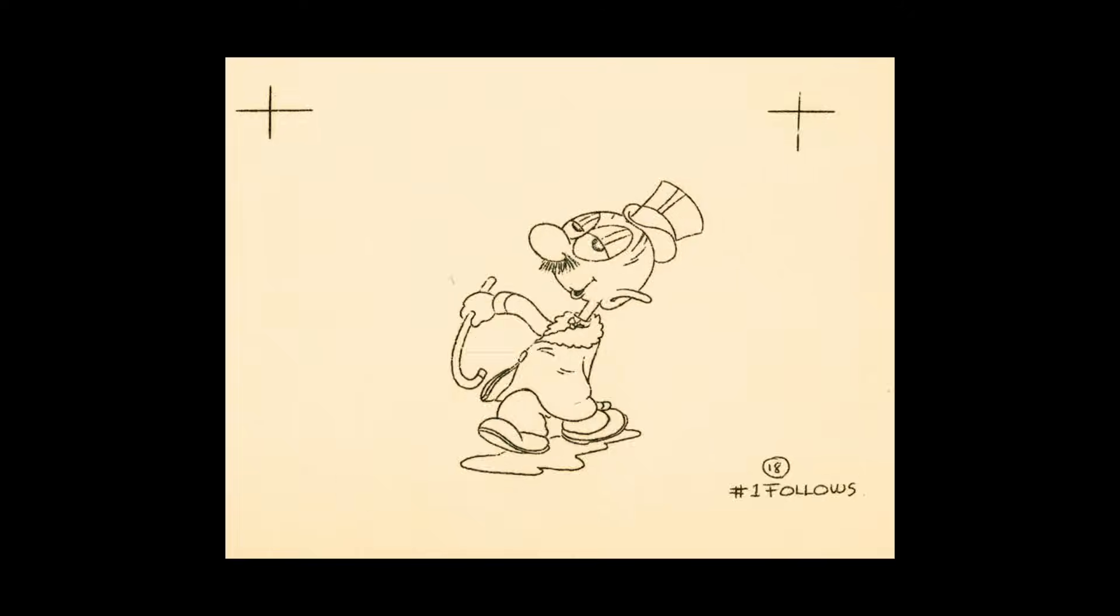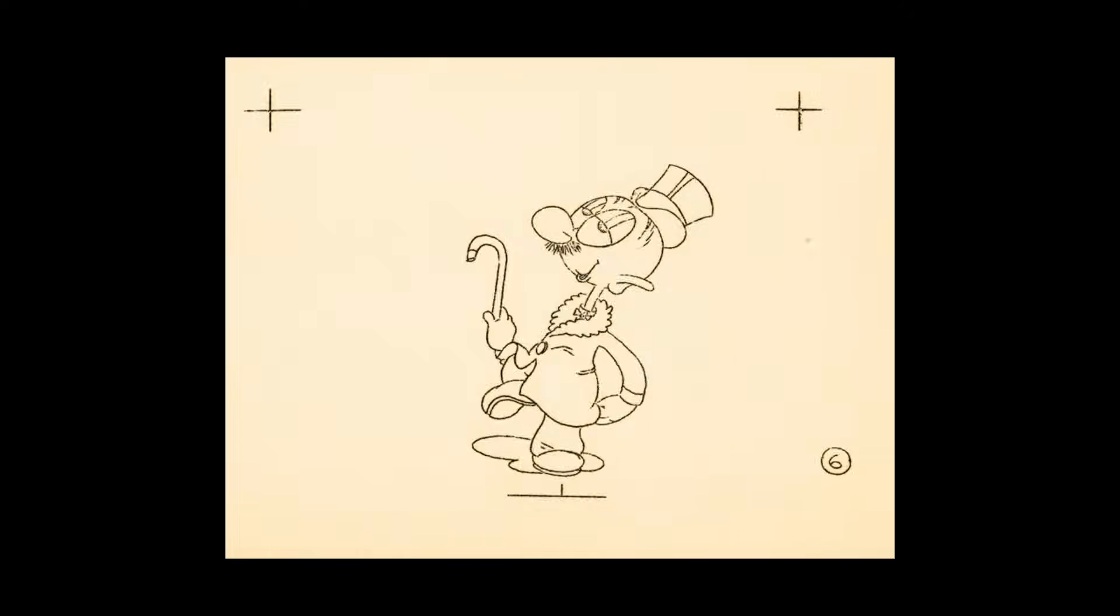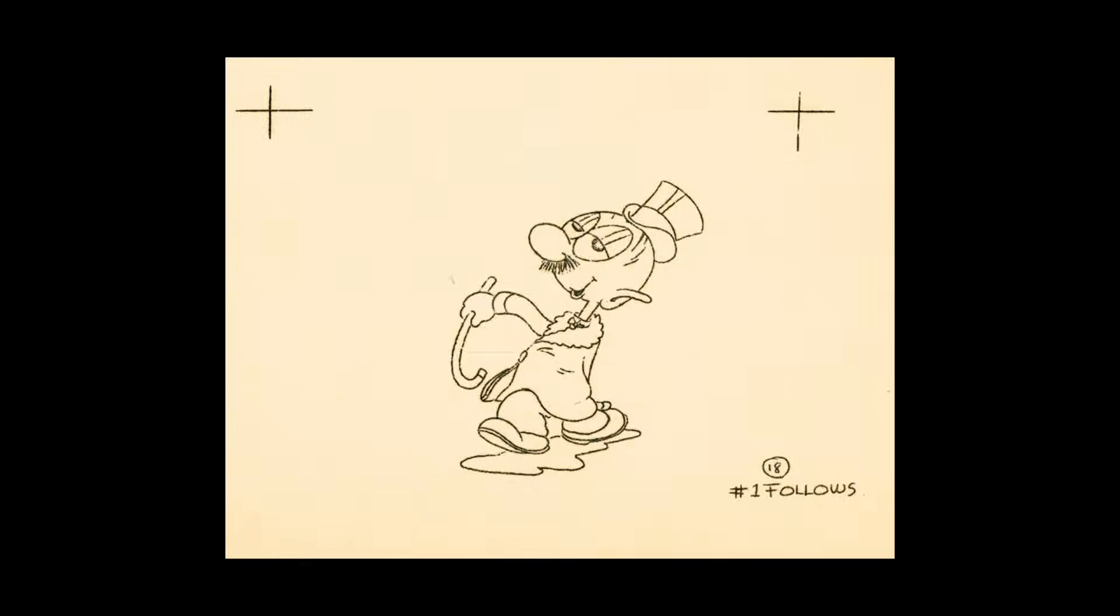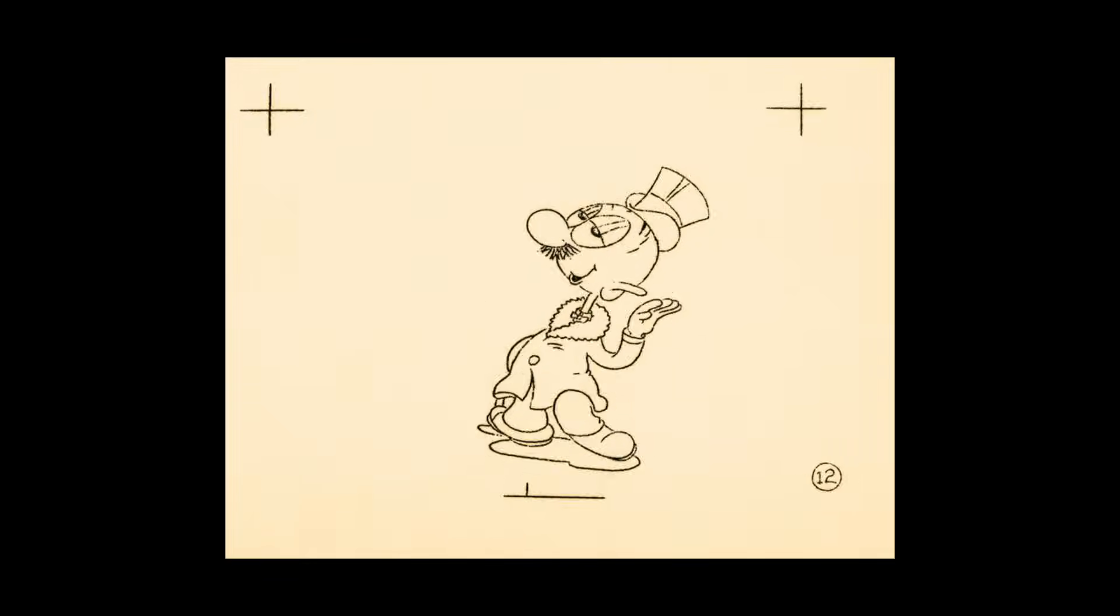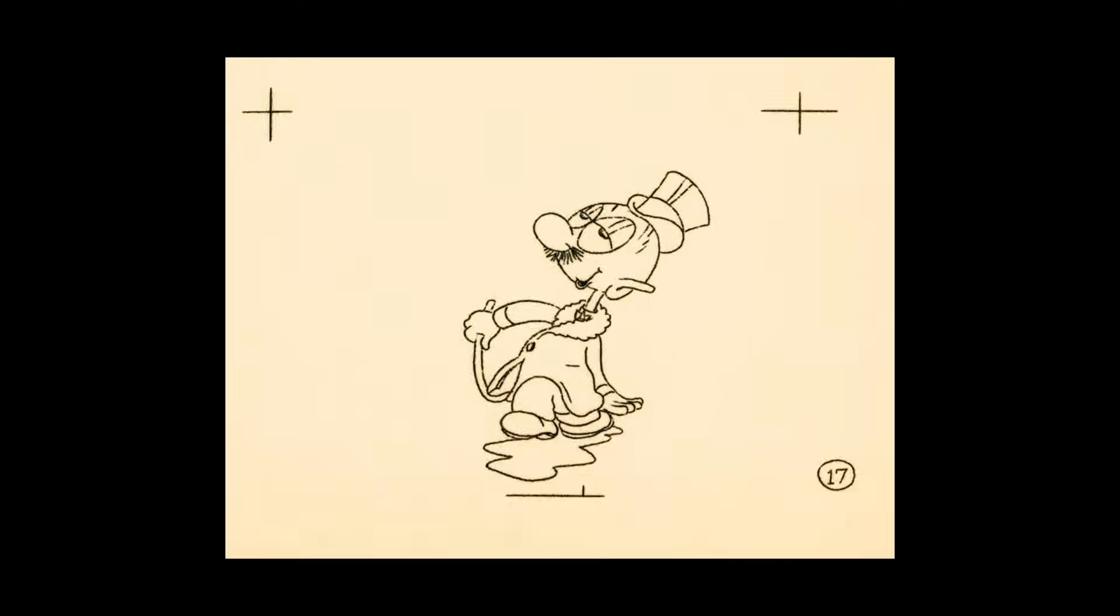Why is that? Intellectually, we know we're just looking at a series of still images. But when we see them change fast enough, they produce the optical illusion of appearing as a single, persistent image that's gradually changing form and position.